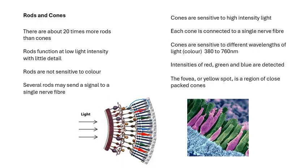Cones are sensitive to high intensity light. Each cone is connected to a single nerve fiber. Cones are sensitive to different wavelengths of light. Visible light is from about 380 to about 760 nanometers. The current theory is that there are red, green, and blue cones sensitive to different colors and intensities, and with those you can actually make up any color.